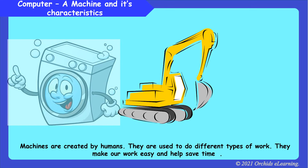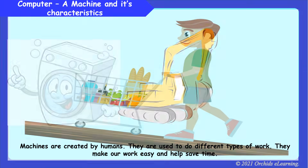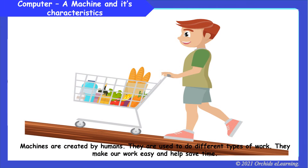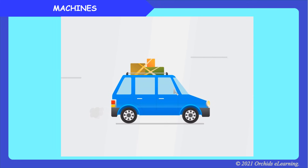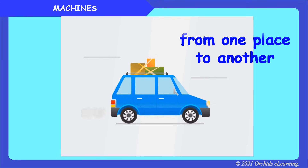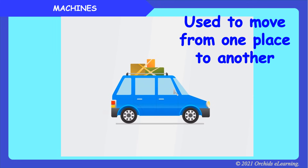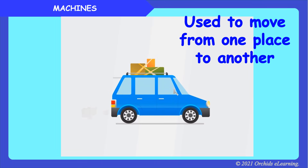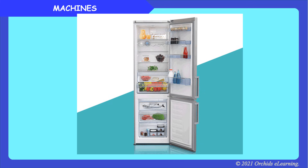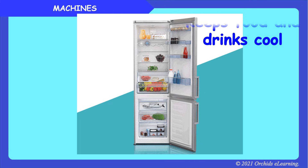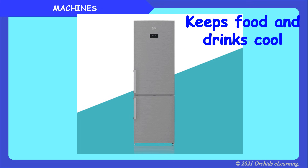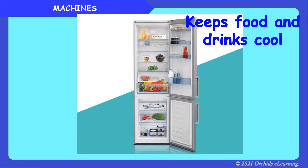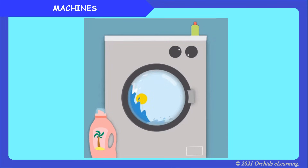Machines are created by humans. They are used to do different types of work. They make our work easy and help save time. A car is used to move from one place to another — it is a machine used outside the house. A refrigerator keeps the food and drinks cool — it is a machine used inside the house.